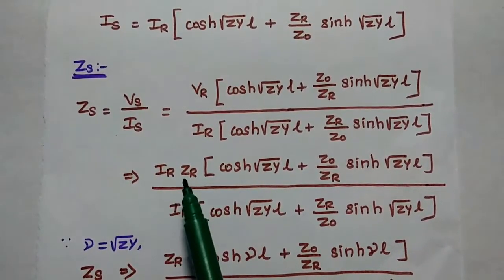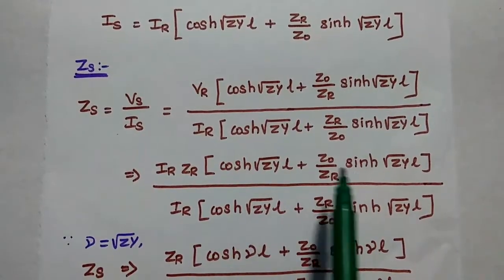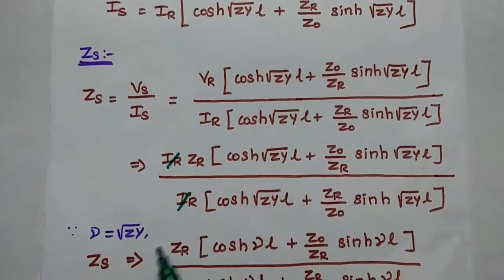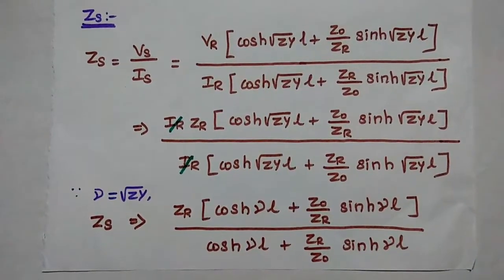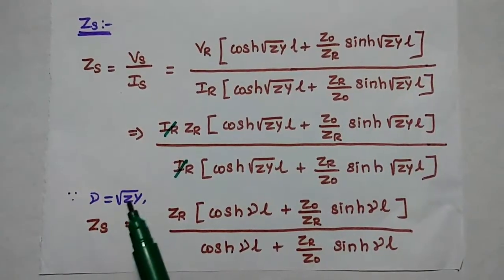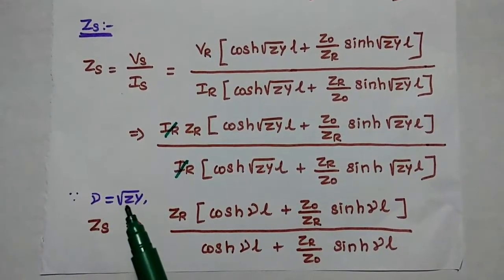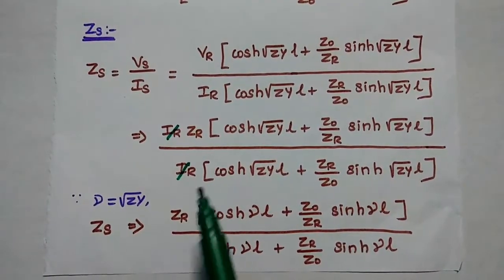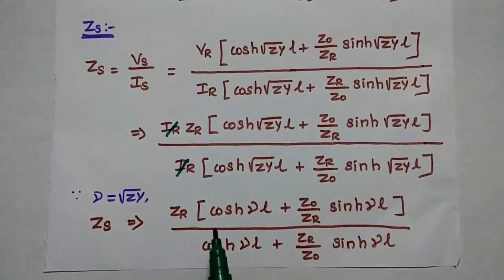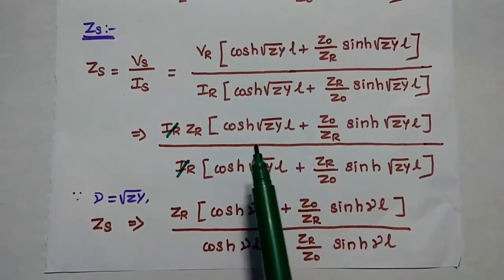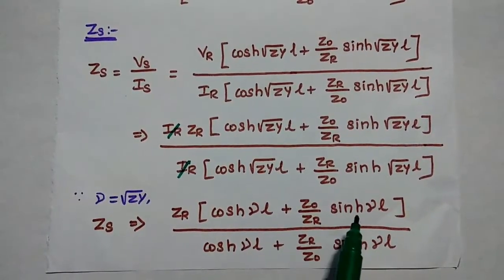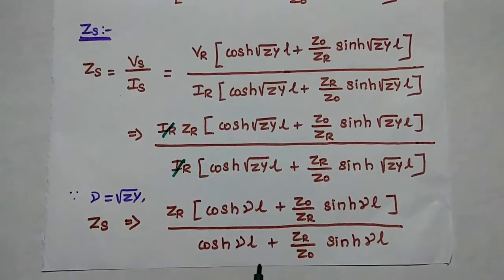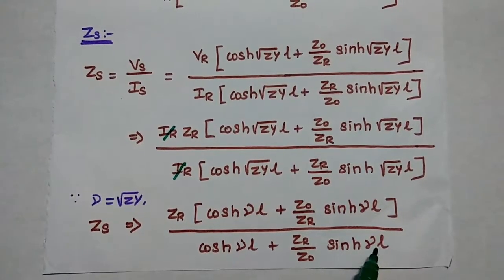V is equal to I times Z. Then we can write that equation accordingly. In the next step, we can divide Ir in the numerator and denominator. At the same time, we have to replace the square root of ZY with propagation constant gamma, where gamma is equal to square root of ZY. Then this equation becomes Zs equal to Zr cosh(γL) plus Z0 divided by Zr times sinh(γL), all divided by cosh(γL) plus Zr divided by Z0 times sinh(γL).